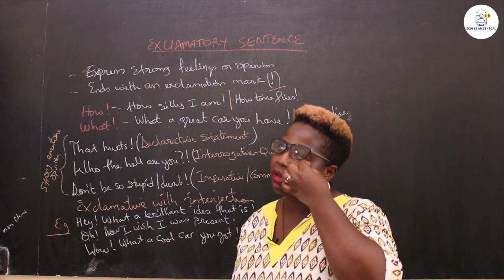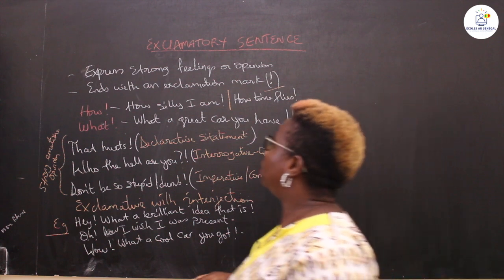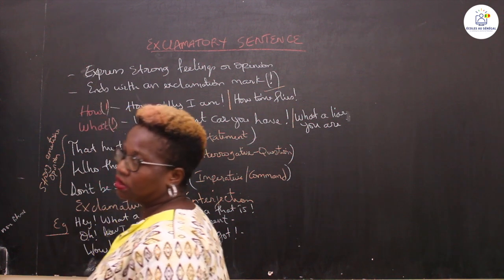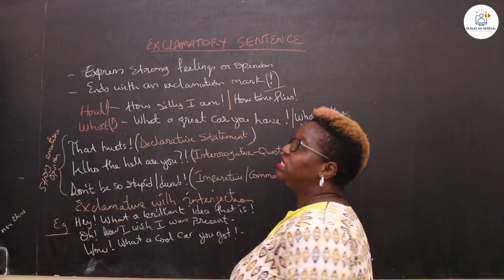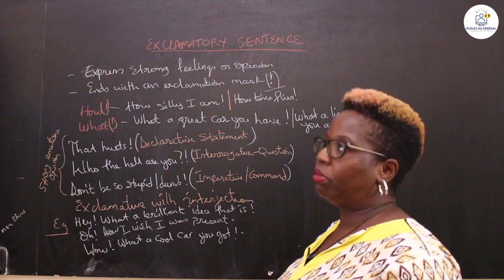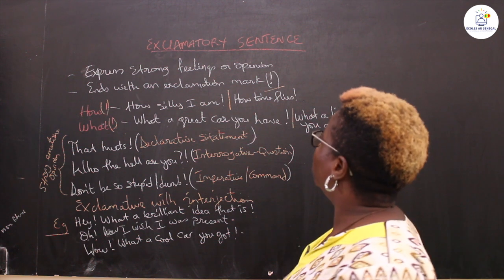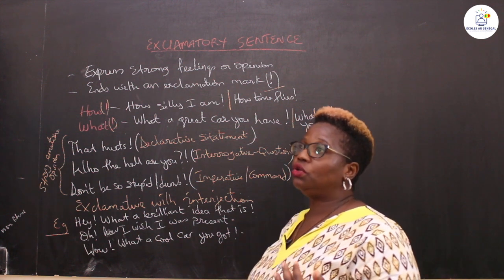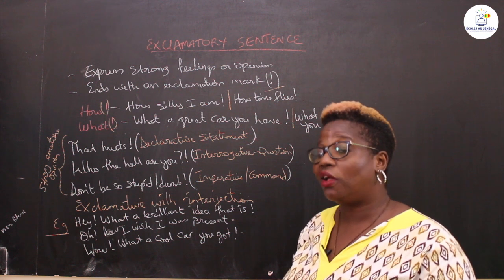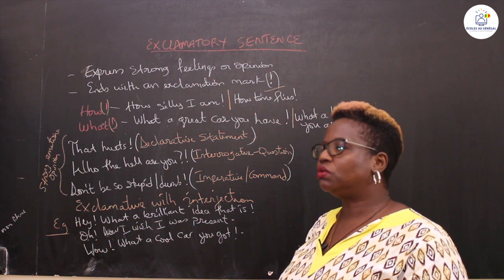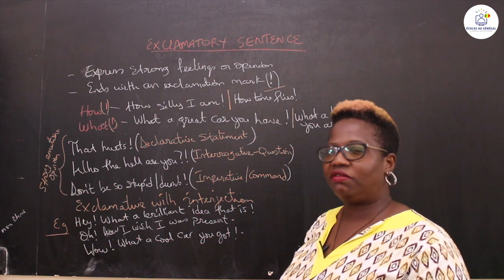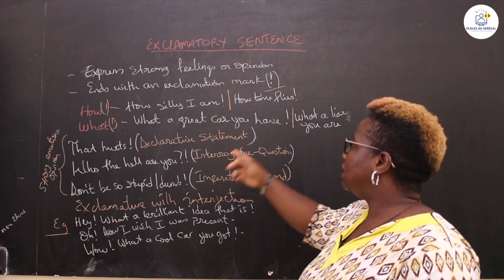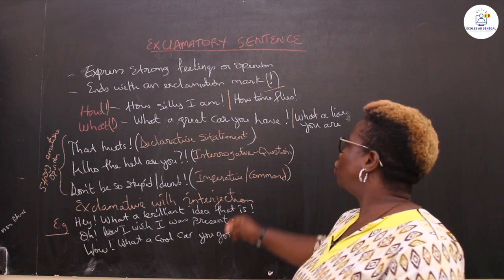The two most common formats for exclamatory sentences start with 'how' or 'what.' For example, 'How silly I am!' — maybe you're trying to do something and you did it the wrong way even though you know how to do it. You say, 'How silly am I?' — there's a question mark there.